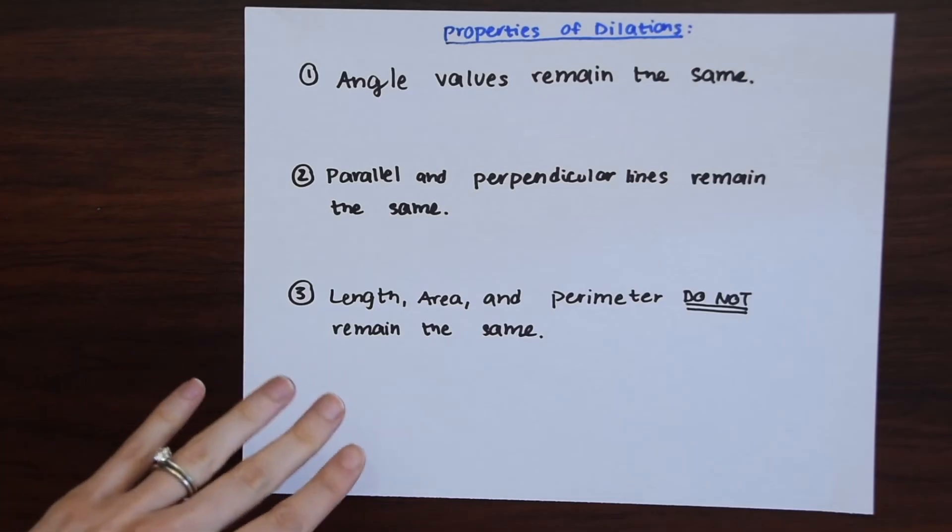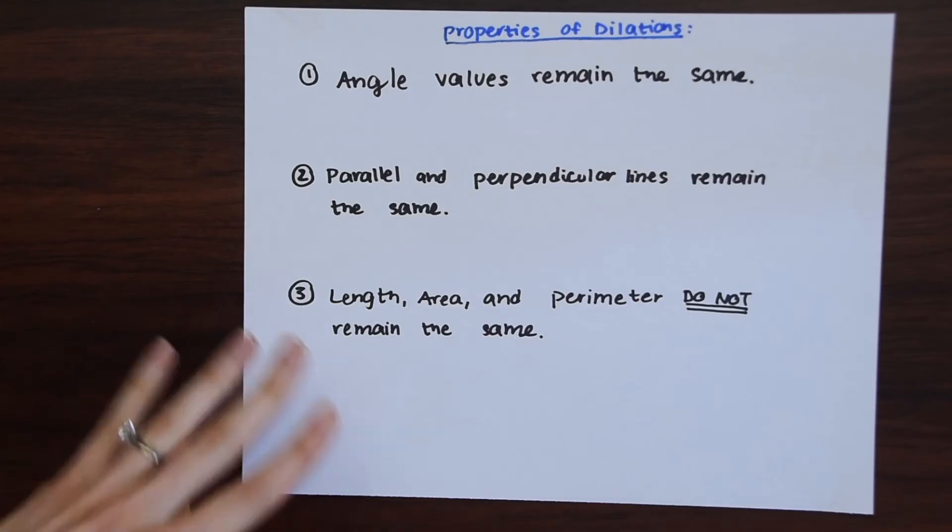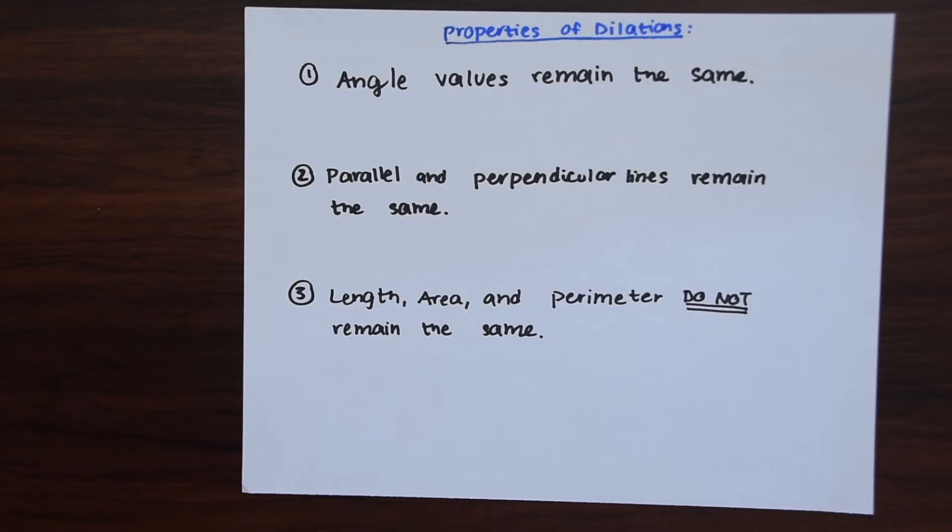But the length, area, and perimeter do not remain the same. So that means when we have a shape and then we dilate it, we're making it bigger or smaller and that length, area, and perimeter are not going to be the same. So that's all we're saying here and these are things just to keep in mind when we look at our examples.